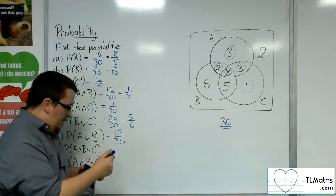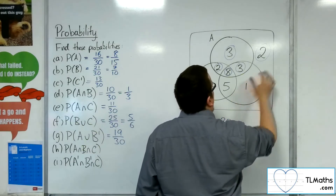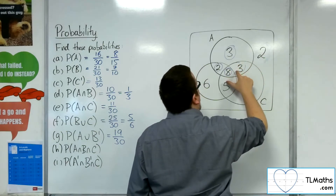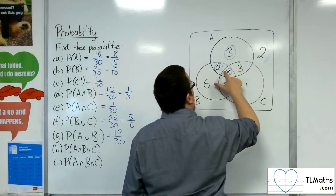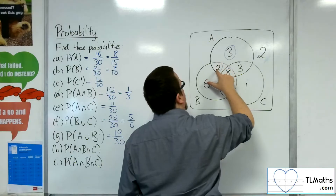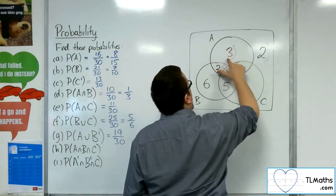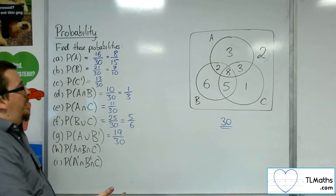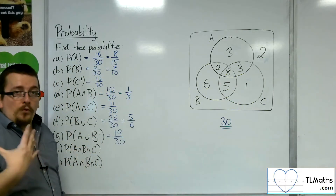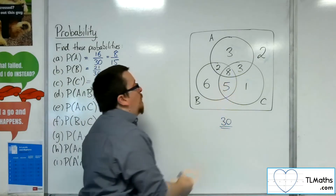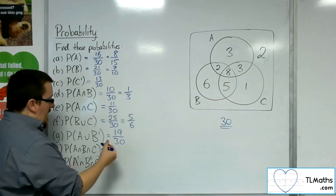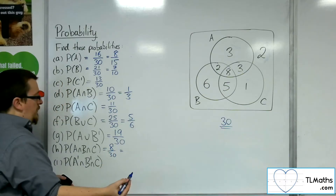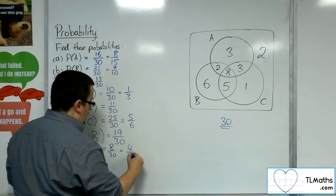A and B and C — the intersection of all three circles. Let me erase those circles so they don't confuse us. The intersection of all three circles is right in the middle with the 8. So that would be 8 out of 30, which is 4 fifteenths.